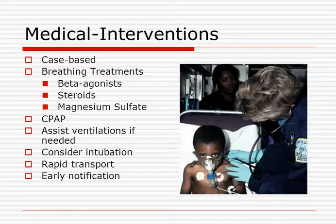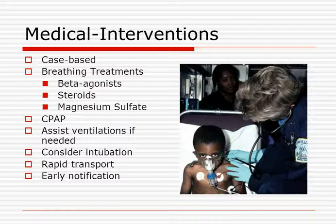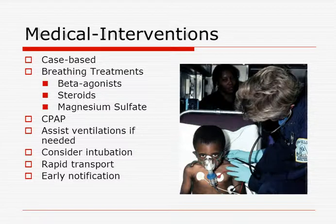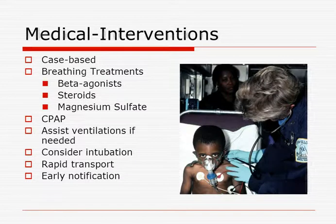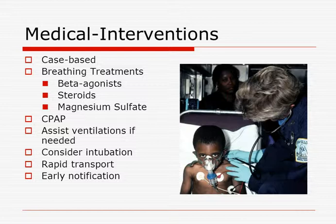Medical interventions are case-based — not everybody gets treated the same. Give breathing treatments with beta-agonists like albuterol. Steroids such as solumedrol may be given at the hospital. Magnesium sulfate is not given pre-hospital in our area but is very popular at hospitals. CPAP can be done for patients above age 16. Assist with ventilations if needed. Consider intubation early. Provide rapid transport and notify the hospital so respiratory and physicians are ready in case the patient crashes.